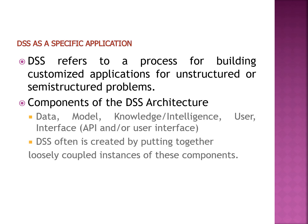Now let us discuss how DSS can be a specific application. This DSS involves a process for building a computerized system. It can be a customized application for specific needs within an organization, maybe to solve unstructured or semi-structured problems. We have several components in the DSS architecture: data, model, knowledge, user interface. Putting together all these components, we can create a decision support system. These components are loosely coupled and independent of each other.